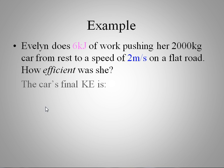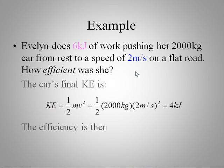The car's final kinetic energy is given by one-half MV squared. Plug in the numbers, we get 4 kilojoules of kinetic energy. We put 6 kilojoules of energy in. So our output over our input is 4 over 6, which is two-thirds, or 67%.